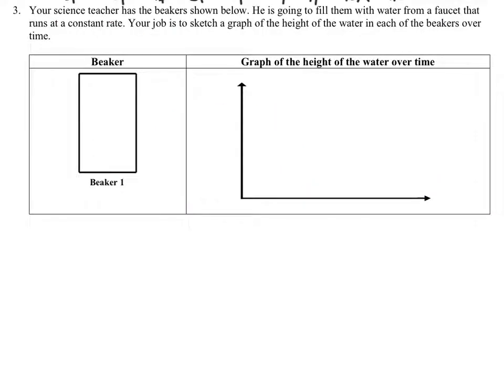Your science teacher has the beakers shown below. He is going to fill them with water from a faucet that runs at a constant rate. Your job is to sketch a graph of the height of the water in each of the beakers over time. So this one is just going to fill up gradually as we go. And so we would expect some kind of straight line right here.